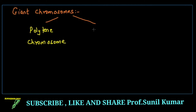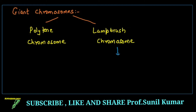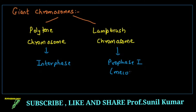There are two types of giant chromosomes that we need to study as far as NEET exam is concerned. One is polytene chromosome and the other is lampbrush chromosome. The polytene chromosome is seen during interphase, and the lampbrush chromosome is observed during prophase one of meiosis.